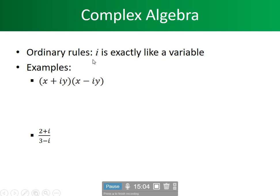Ordinary rules: j is exactly like a variable — we treat it like a variable. We have (x + jy) and its conjugate (x - jy); the only difference is the minus sign. When we multiply a complex number by its conjugate, we get a real number. When we have a fraction with an imaginary number on the bottom, we must find the conjugate and multiply the top and bottom by it, so that we get a real number on the bottom with only real and imaginary terms on top.